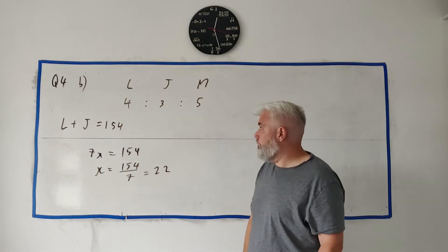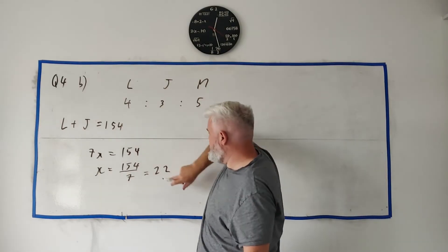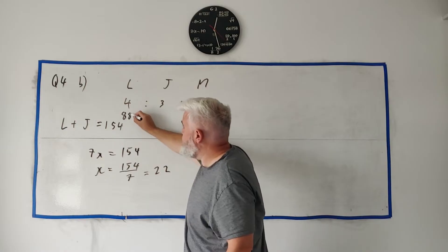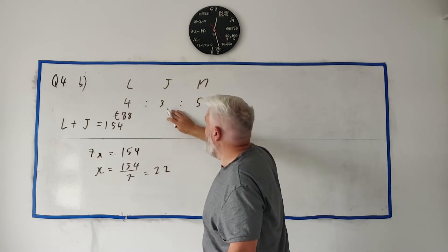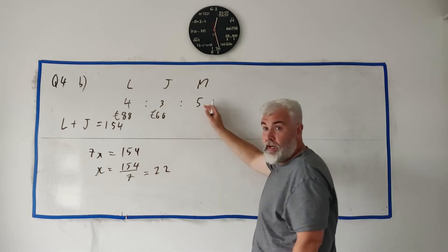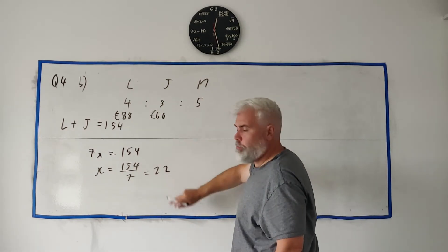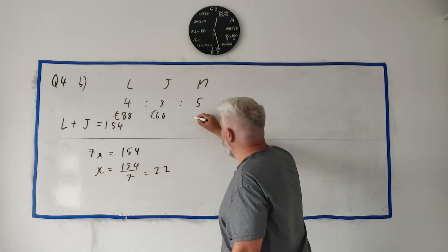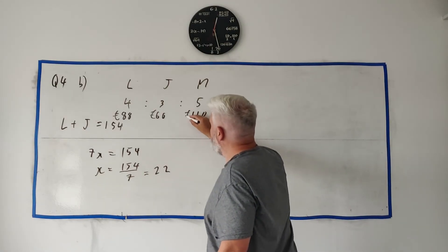So I can write all of these now. Liam pays four of these, he pays 88 euro, John pays 66 euro, and Marta, which was the question, pays 5 times 22 which is 110 euro. So that's the answer to part B.